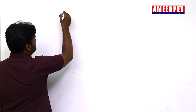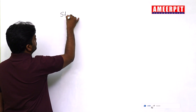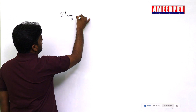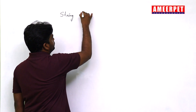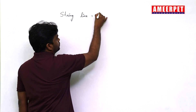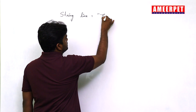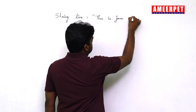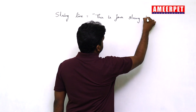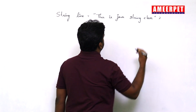In this video I am going to explain how to split a string into individual words. I am explaining about the split method. I am taking a string — String line equals to, suppose, 'this is java string class'. I am taking a line like this.